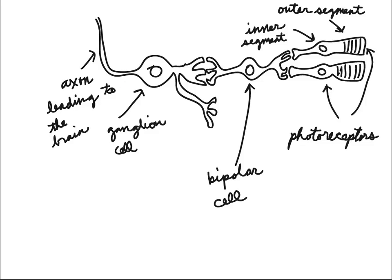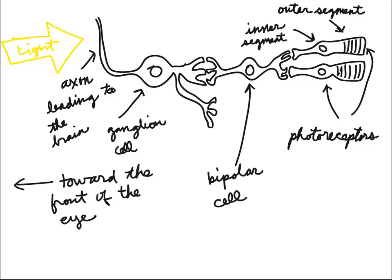Now that we know the basic parts of the retina, we can take a look at a little bit about how the light enters. You can see here that light actually enters the retina from this side.